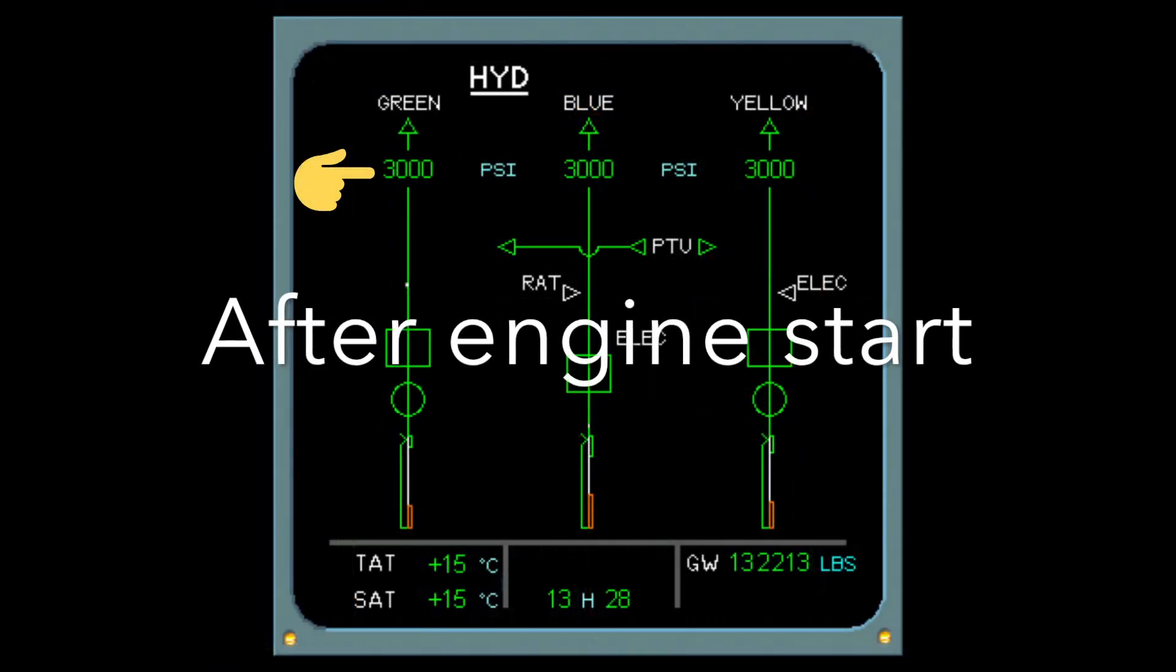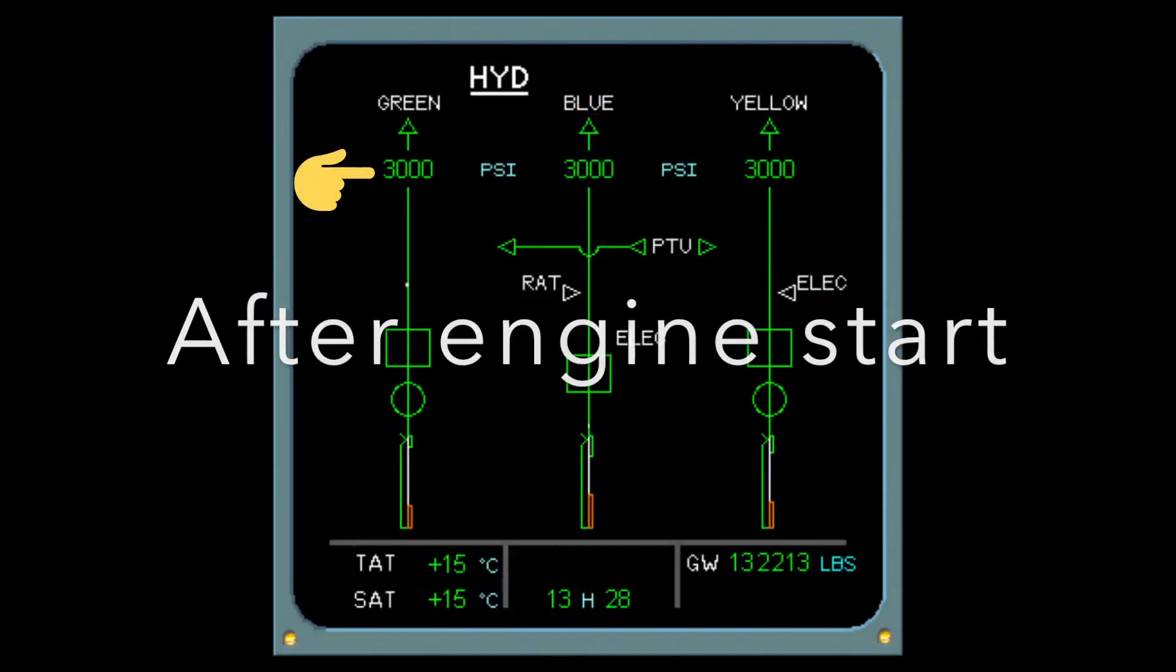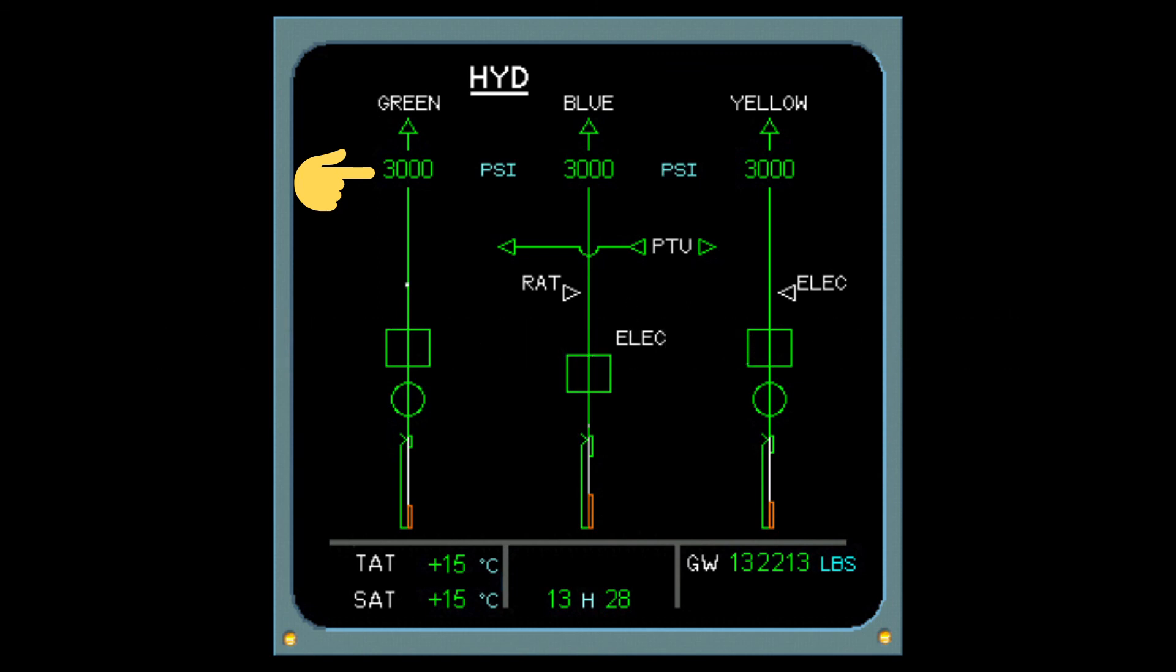Now let us have a look at the same page after the engines have started. You can see that the hydraulic system is working normally and each system is running at 3000 PSI pressure. The PTU position is still the same, auto and available, but disconnected since the operating conditions are not satisfied.